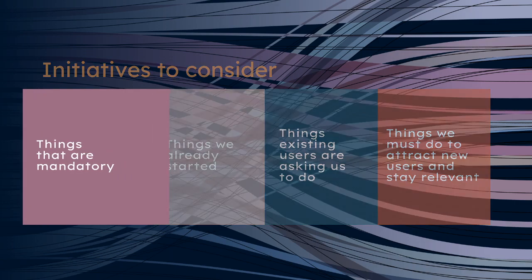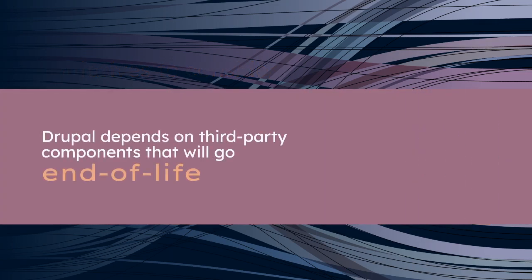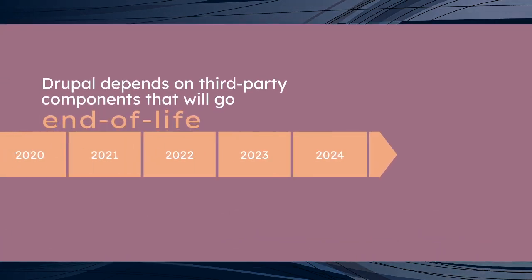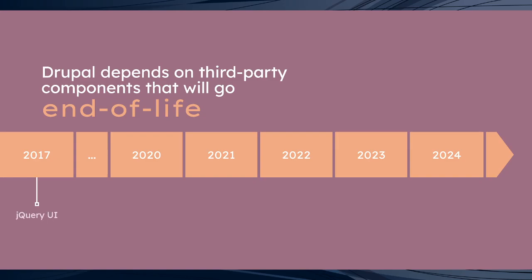Let's go to these four buckets and start with the things that we need to do because we feel they're mandatory to do. A lot of that comes down to keeping Drupal secure. As you know, Drupal depends on a lot of third-party components and each of these components have an end of life. If you put that in a timeline like this, you can see some of the components or the dependencies that Drupal has.